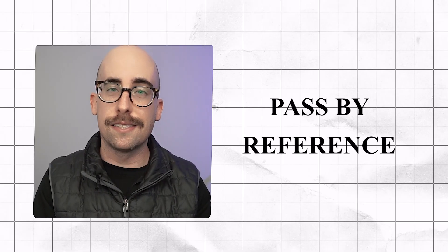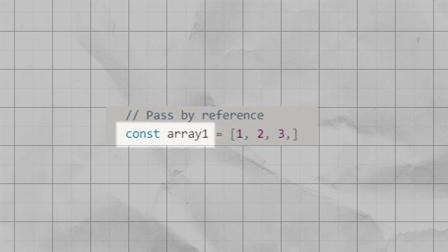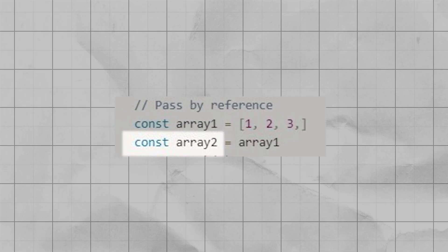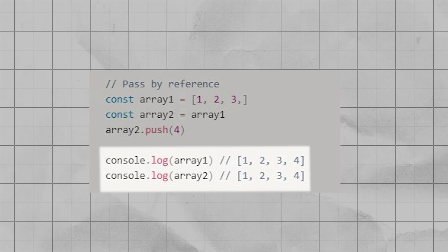Pass by reference, on the other hand, is the complete opposite. Let's say I have an array called arrayOne with numbers one, two, three in it, and then I have arrayTwo assigned to arrayOne. If I make updates to arrayTwo, it will also update arrayOne, because arrays and objects are passed by reference. What's happening is that they are referencing the same place in memory — they're really looking at the same data — so if you update one, it will update the other.